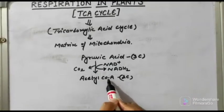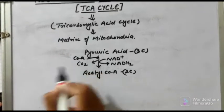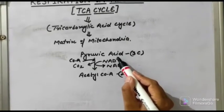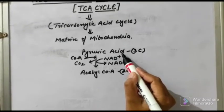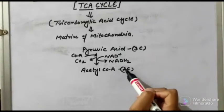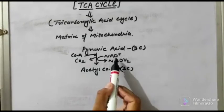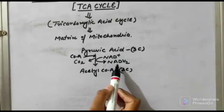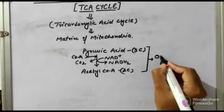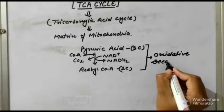Because there is an addition of coenzyme A, we add coenzyme A in the reaction. Normally, pyruvic acid formed during glycolysis will shift from the cytoplasm to the mitochondrial matrix. Pyruvic acid, a three-carbon compound, converts into acetyl coenzyme A, a two-carbon compound. The one carbon comes out as carbon dioxide and NAD⁺ gets reduced to NADH₂. This whole reaction is known as oxidative decarboxylation.